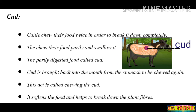The next feature is cud chewing. In cattle, they chew their food twice in order to break it down completely. Because cattle have only gum pads instead of upper teeth, they cannot properly chew food at one time. So they chew their food partly and swallow it — this partly digested food is called cud. The cud is brought back into the mouth from the stomach and chewed again. This act is called chewing the cud, which softens the food and helps to break down the plant fibers.